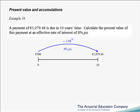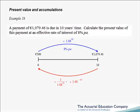To get the accumulation we multiplied by the accumulation factor of 1.08 to the 10. So to go backwards, we could simply divide by 1.08 to the 10. Alternatively, to go backwards we could simply multiply by 1 over 1.08 to the 10, or equivalently, 1.08 to the minus 10.